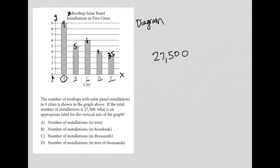What is an appropriate label for the vertical axis of the graph? Okay, well, choice A says 10. So let's see, if we were to try out choice A.